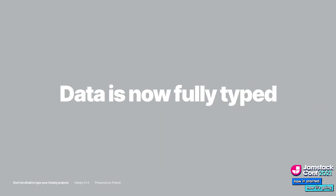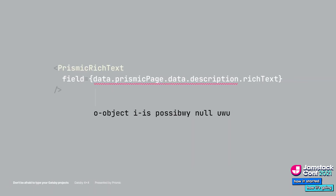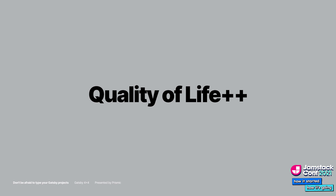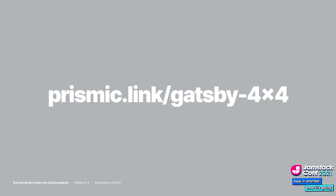Now your data is fully typed, so when you're using GraphQL data in your pages, you don't have to worry about anything. If something might be null, TypeScript is going to tell you to handle it correctly. And if you're not sure what's available, you can just use the autocomplete. There you have it — quality of life improvements right out of the box. Check out the link to see a sample project if you want to learn more.